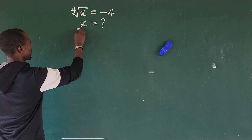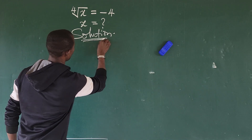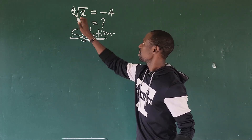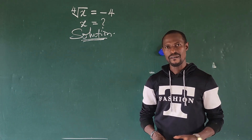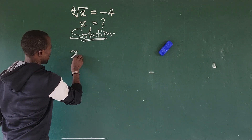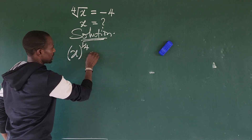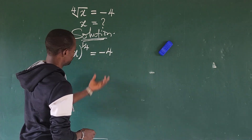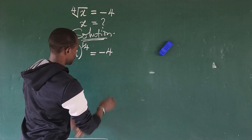Okay, so we take our solution. Let's look at this question critically. The question is: the fourth root of x is equal to minus four. So we just have to rewrite this — we have x to the power of one over four, and this is equal to minus four.